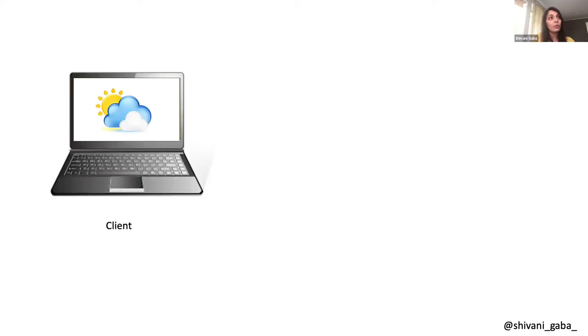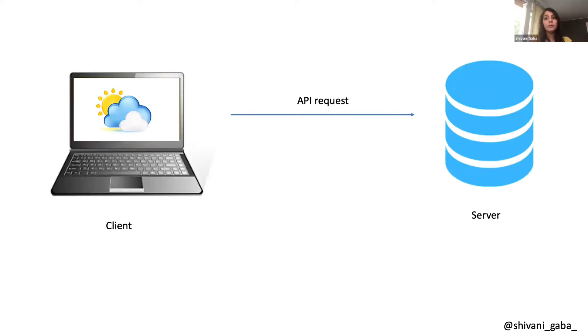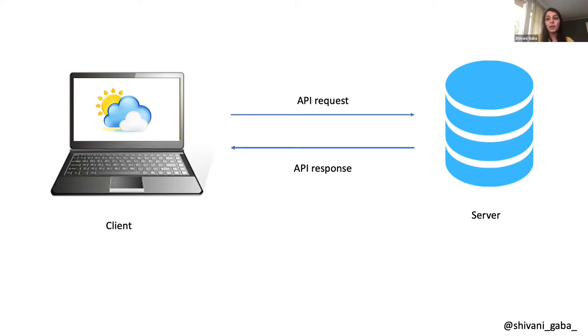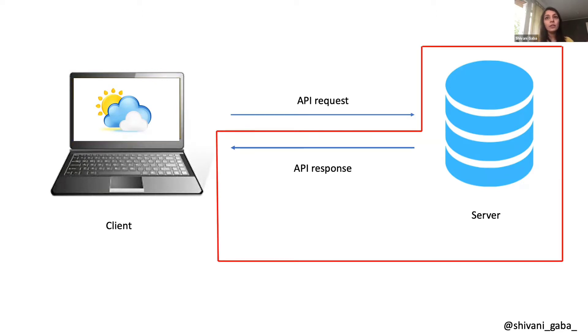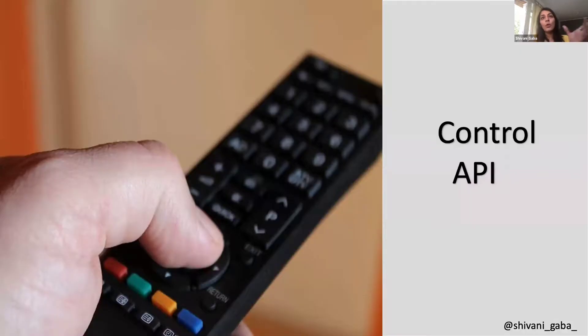Let's go back to the presentation to see what the problem is and how we tackle it. Currently we have a client with a web app making API requests to the OpenWeather server, which is a third party to us. We get an API response which we display on our client. The problem with testing complicated scenarios is that we don't have any control over the APIs.